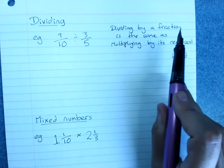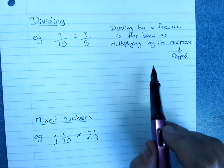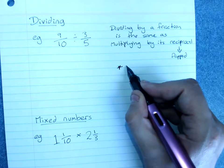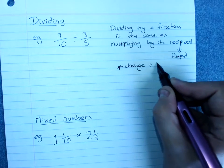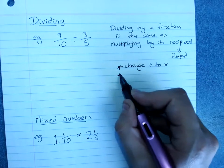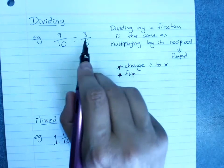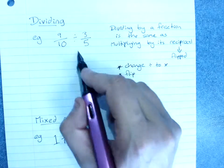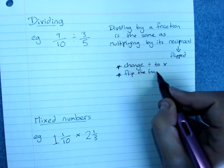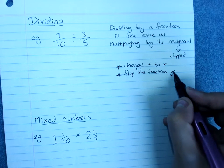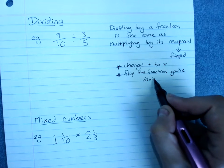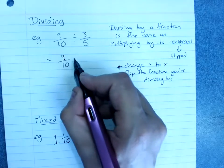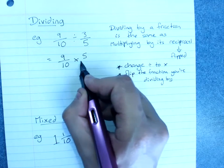Dividing by a fraction is the same as multiplying by its reciprocal. So our steps are change the divide to times and flip the fraction you're dividing by. Not the first fraction, the second one here that you're dividing by.